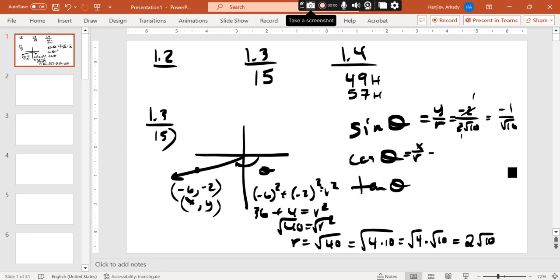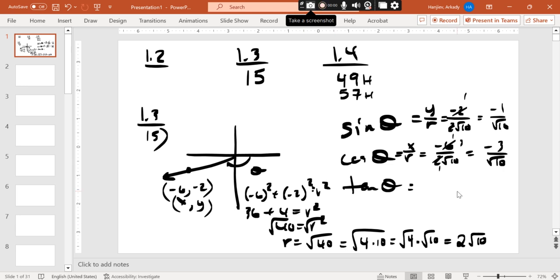How about x over r for a definition for cosine? And we get ourselves a negative 6 over 2 root 10. And how about reduce this guy here? 1 and 3. And how about a negative 3 over root 10? And then tangent. Y over x. How about a negative 2 over negative 6? And how about 1 third positive? Are we good with 15?